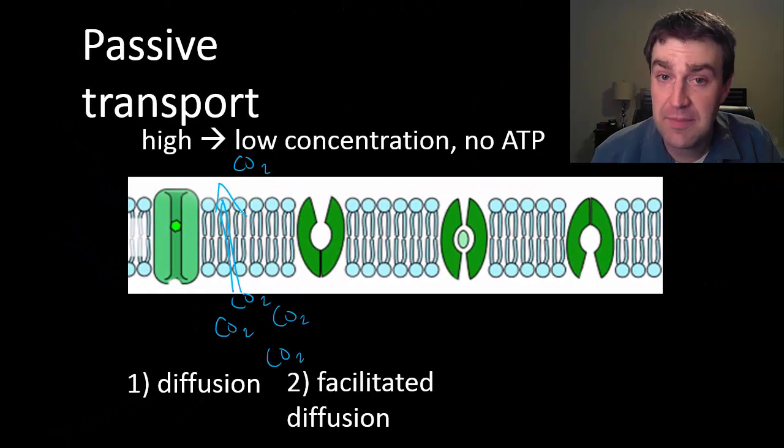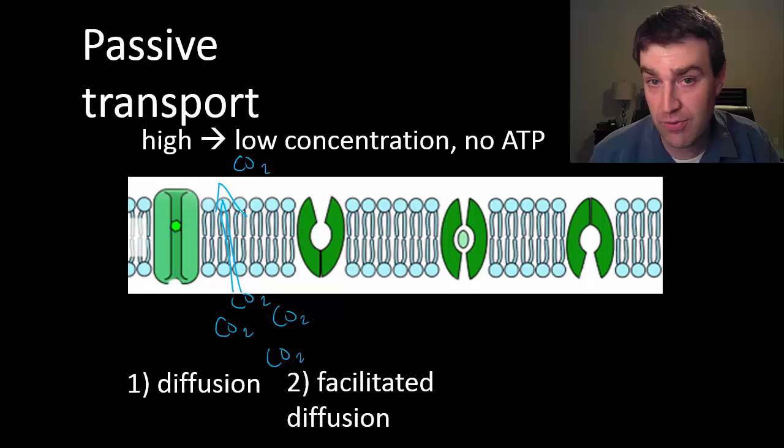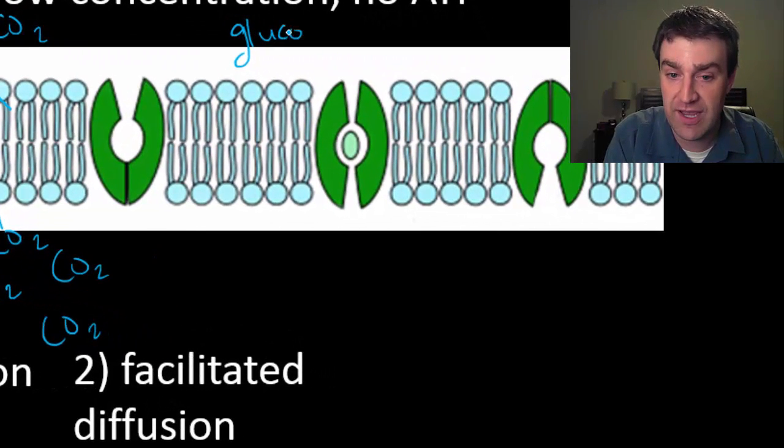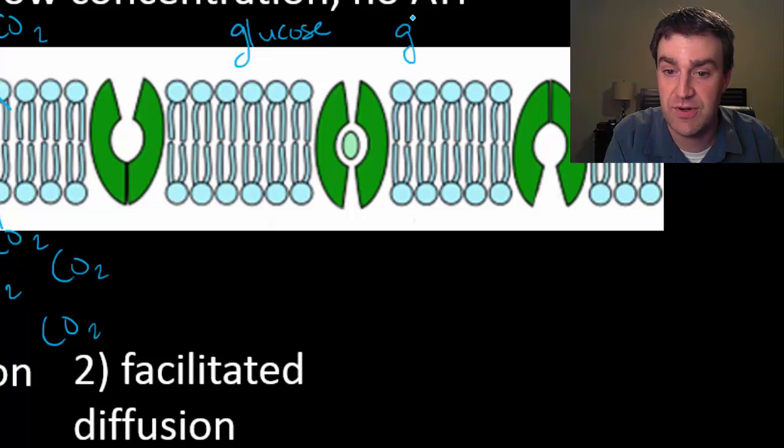The second type of passive transport would be facilitated diffusion. It would just be any other type of particle that has to use a transport protein in order to move from its high to its low concentration. That might be like glucose, the sugar we have to bring in in order to do cellular respiration.